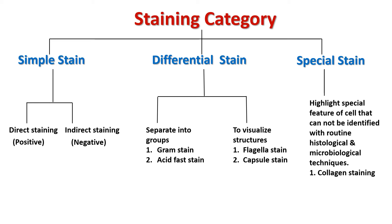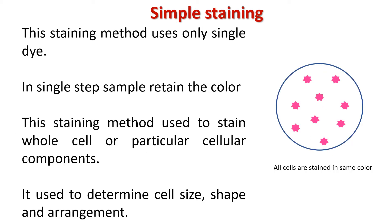In this video we are going to cover simple staining method. In this method, a single dye is used — two or more dyes are not used. Only one single step is required to stain the target, and everything stains in the same color. This staining method is used to stain the whole cell or a particular cellular component.